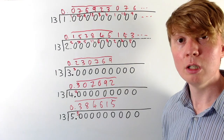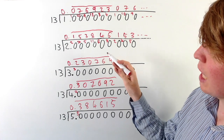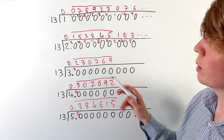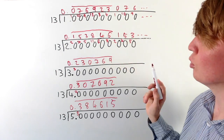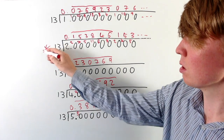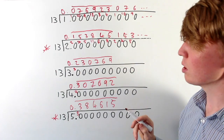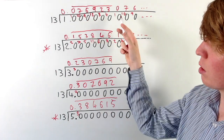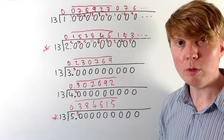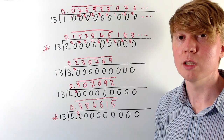Writing out all the thirteenths from 1/13 to 12/13, we can see two different cases emerge. Some fractions use the digit string 076923 cycling through different starting points, while others use the digit string 153846 cycling through different starting points. These are two distinct repeating cycles for the 13ths.